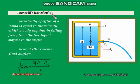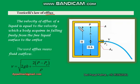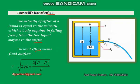Torricelli's law of efflux. Let me explain the meaning of the term efflux. Consider a closed tank of area of cross section A filled with some fluid up to a certain height H. At a depth h from the free liquid surface, there is an opening through which fluid flows out. This opening is known as an orifice, and the outflow of fluid through this orifice is known as efflux. The velocity with which the fluid flows out is known as the velocity of efflux.